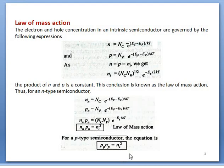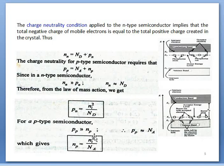With the help of these equations, we can determine the concentration of minority charge carriers — Pn in n-type and Np in p-type. So with the help of the charge neutrality condition, we can determine the concentration of minority charge carriers in extrinsic semiconductors.